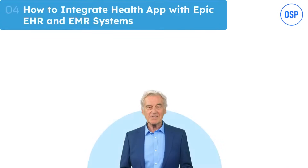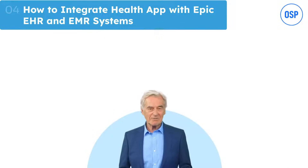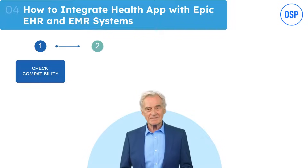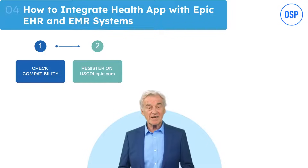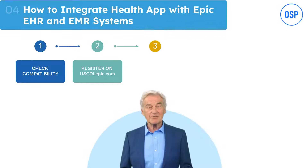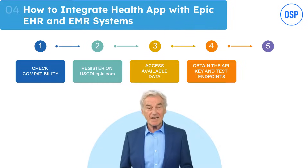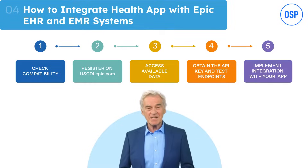Let's see how integration between a health app and the Epic EHR system happens, and what steps are involved. Typically the process involves five steps. First is to check compatibility — ensuring Epic EHR supports the sites from where data will be extracted. Next is registering on uscdi.epic.com to get an API key. Then confirming that the health app or software has access to essential data needed. The next step is to get the API key and test all endpoints to ensure proper functioning. The last step is to include API calls in the app's code to finally implement and test.